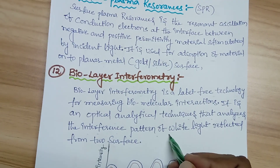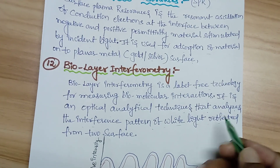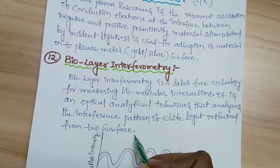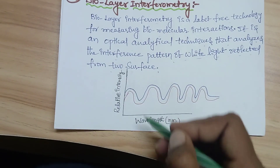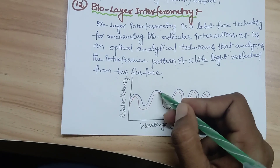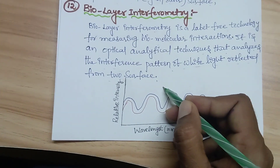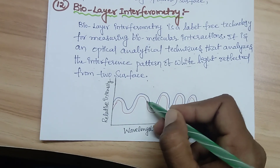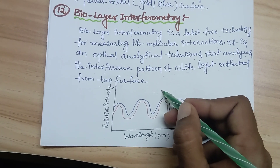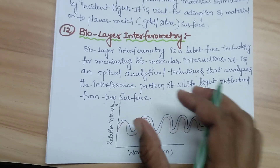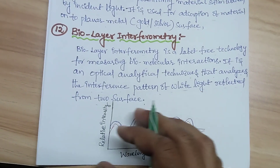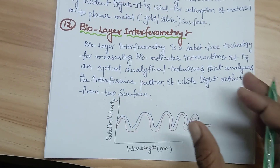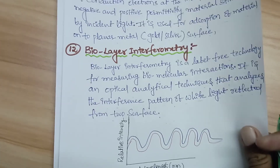I draw it here — a graph of relative intensity versus wavelength. The blue line indicates one surface of the layer and the red indicates the other surface. With BLI techniques, you can reflect from two surface layers simultaneously — that is the main benefit of biolayer interferometry.